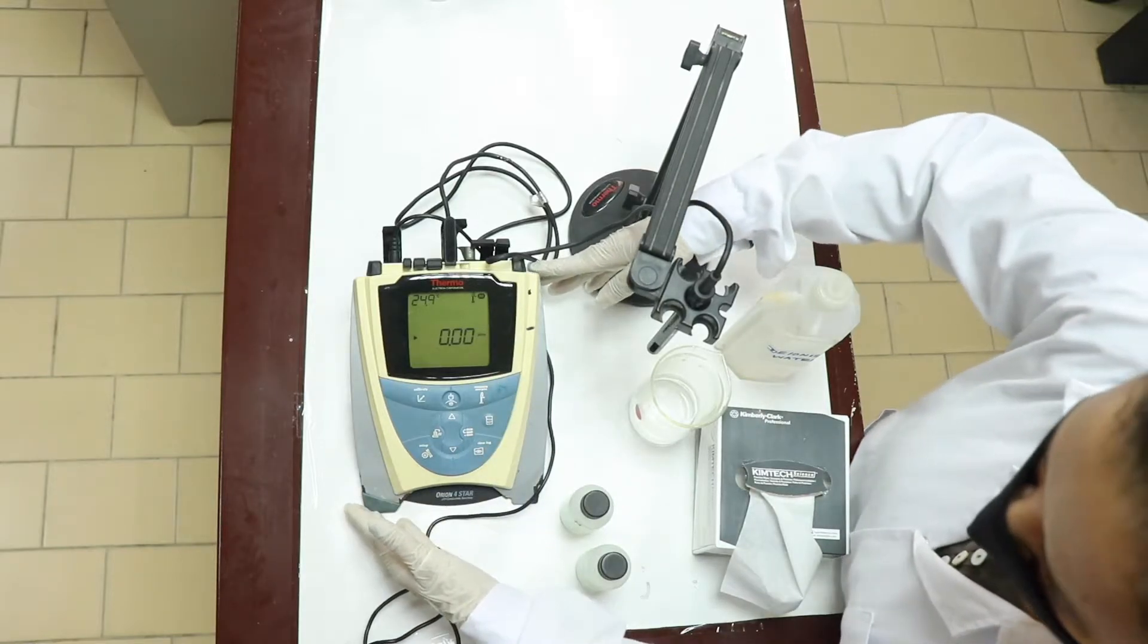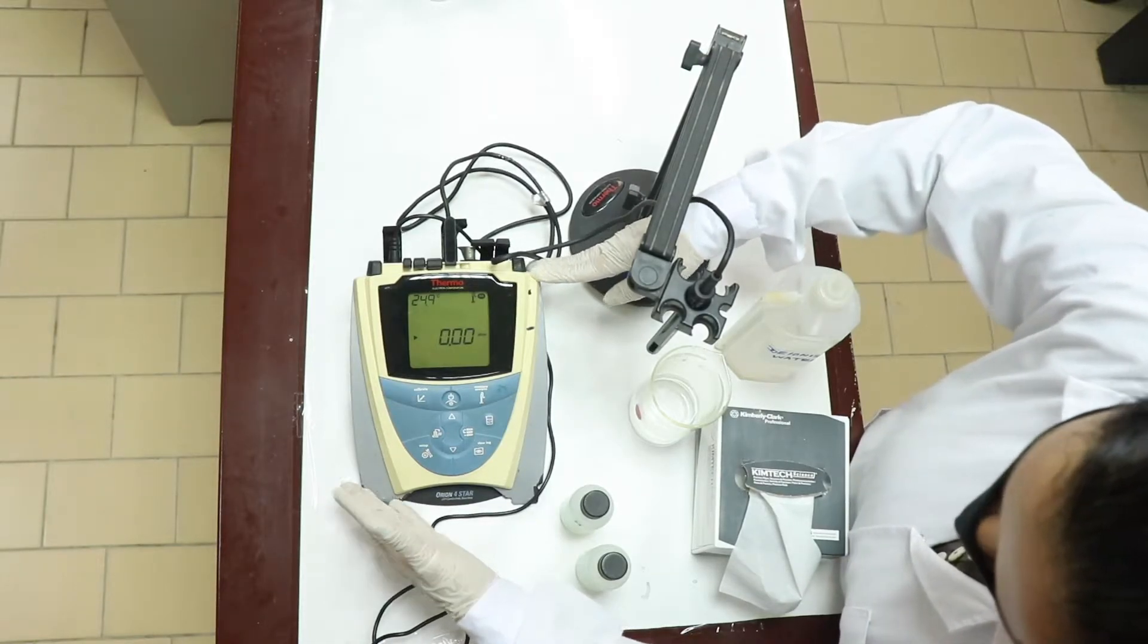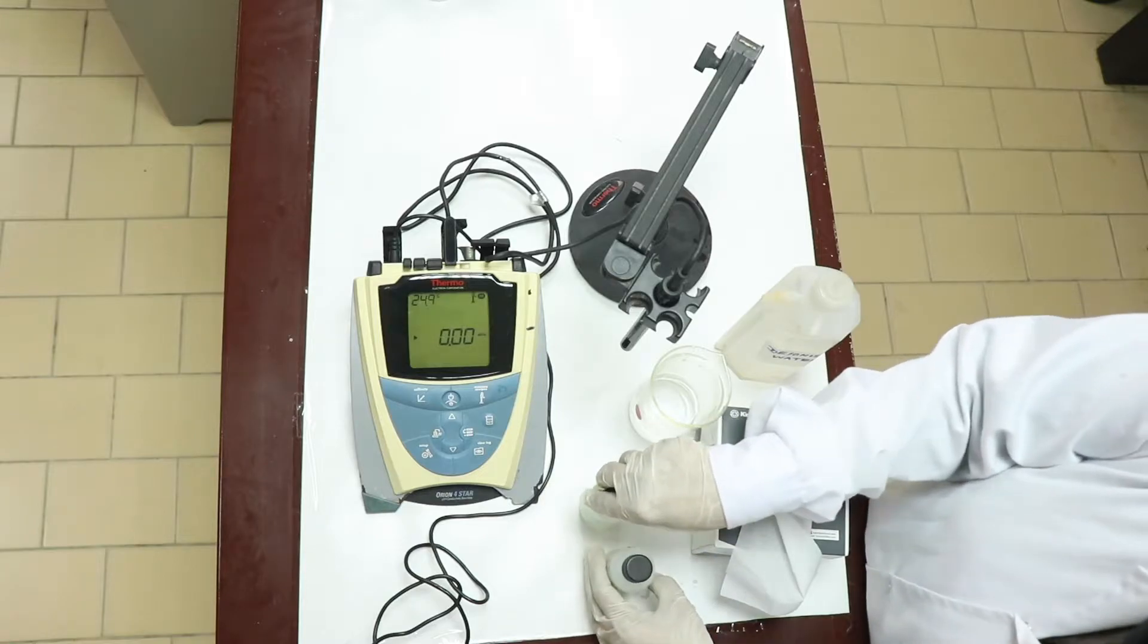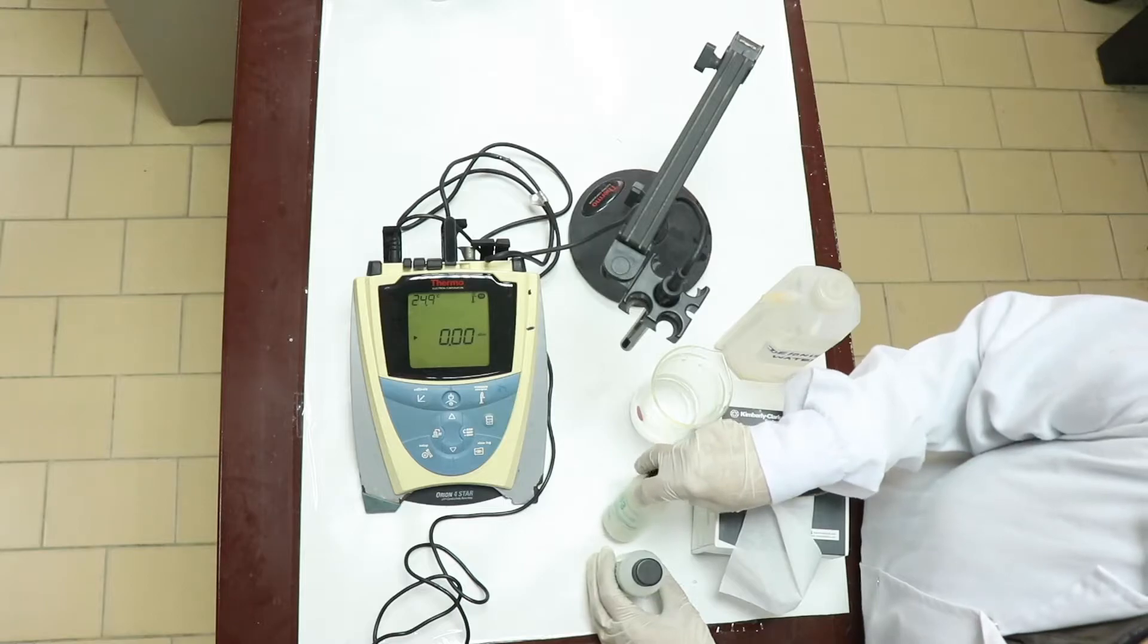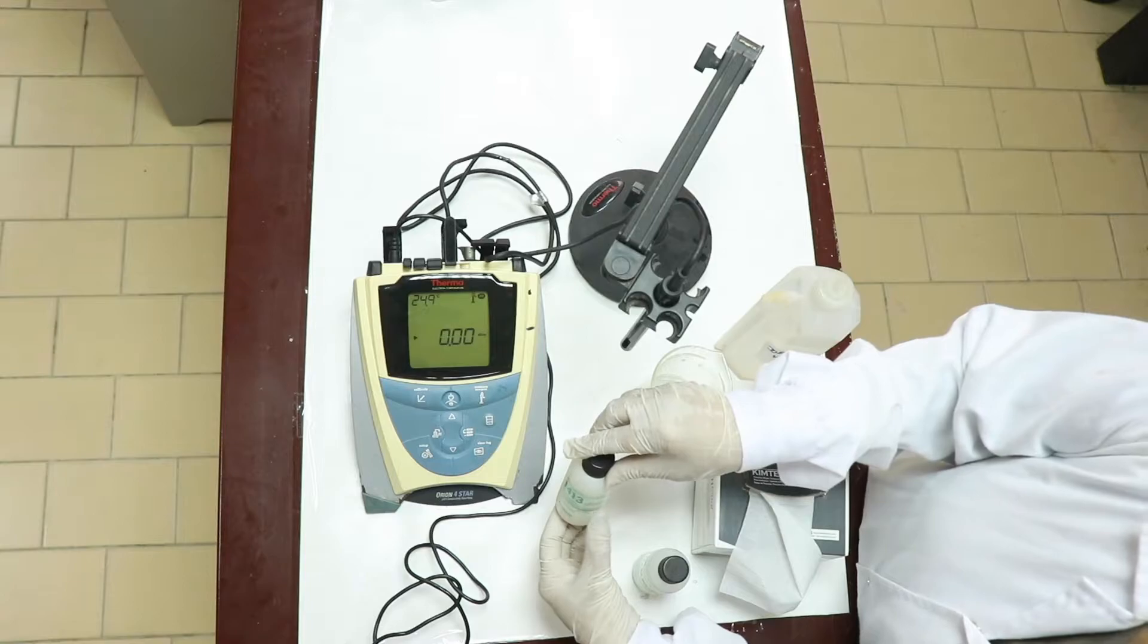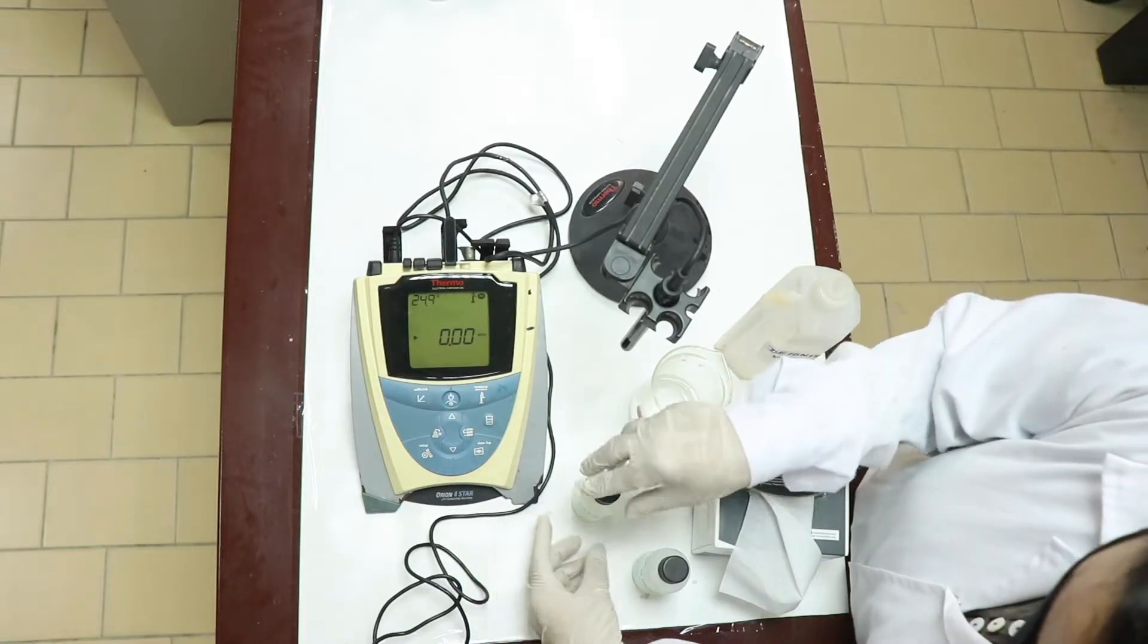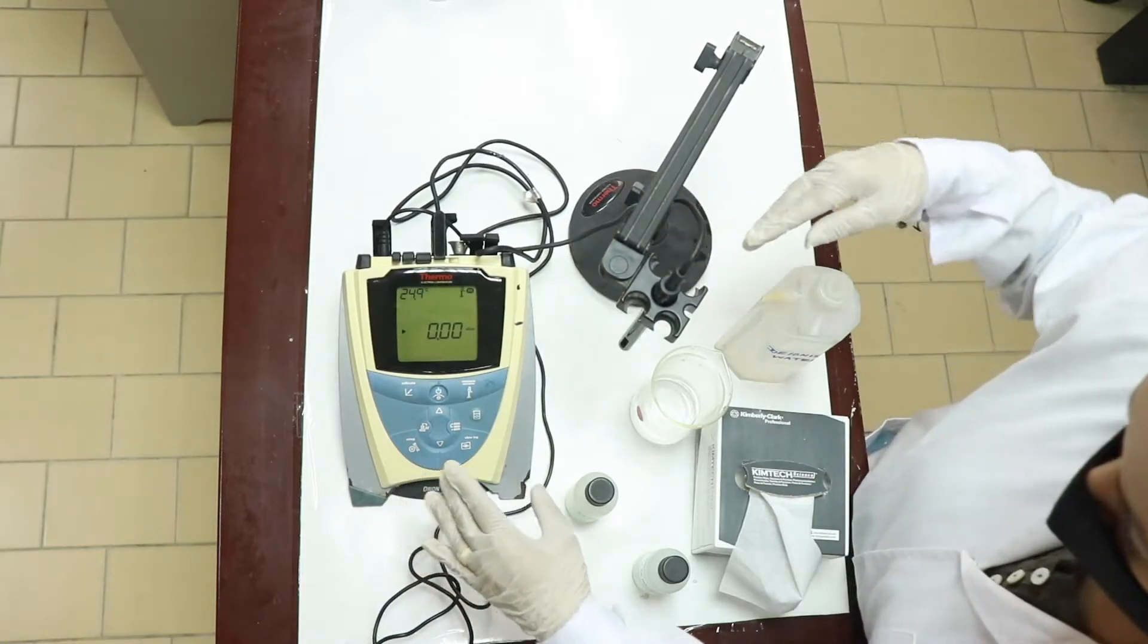First we have to calibrate this machine. We are going to check whether this machine is able to read the conductivity of the solutions which we already know. By this we are able to cross check whether the machine is able to read the values correctly or not. First let us use the small value 1413 microcms per centimeter. This is the conductivity of the solution which is given. I am going to check whether this machine is able to read this. That process or step is called as calibration.